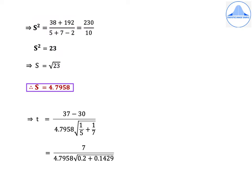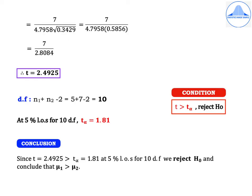Substituting in S-squared: S² = (38 + 192) / (5 + 7 − 2) = 230 / 10 = 23, so S = √23 = 4.7958. Substituting in T: T = (37 − 30) / (4.7958 × √(1/5 + 1/7)) = 7 / (4.7958 × √0.3429) = 7 / (4.7958 × 0.5856) = 7 / 2.8084. Therefore T = 2.4925.